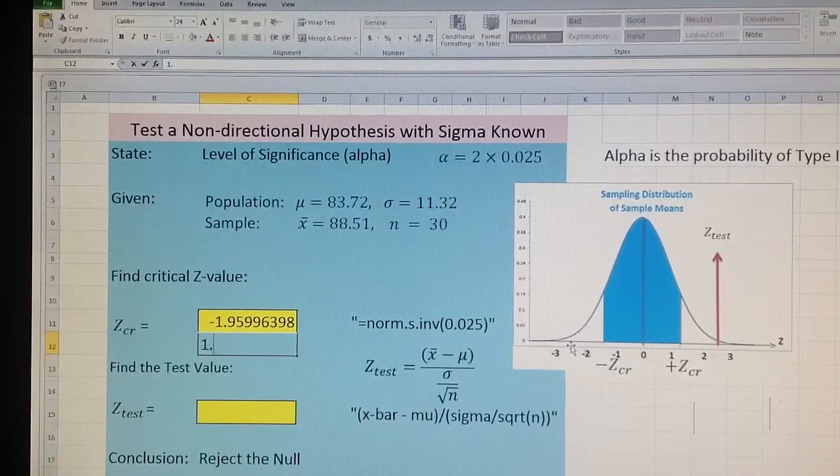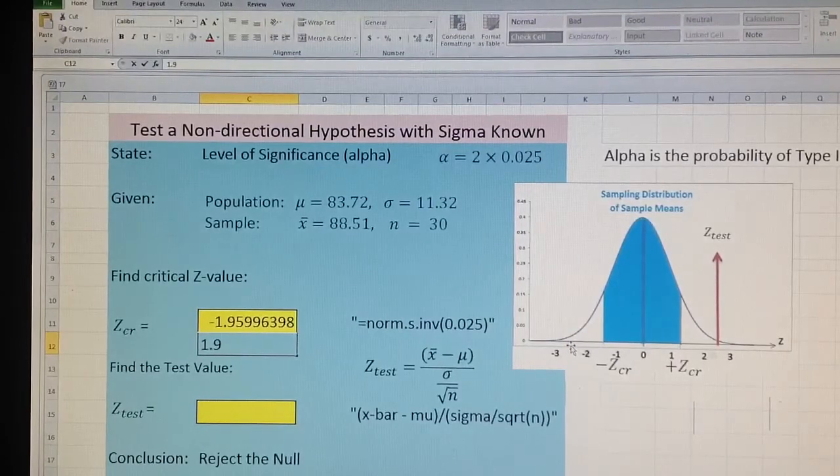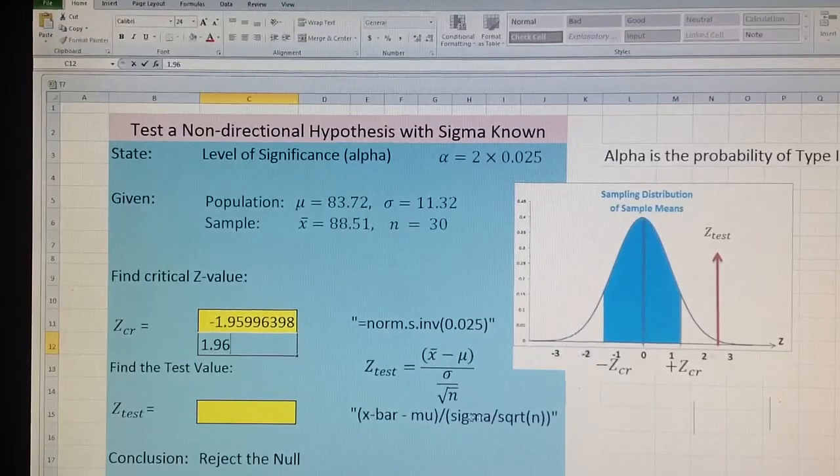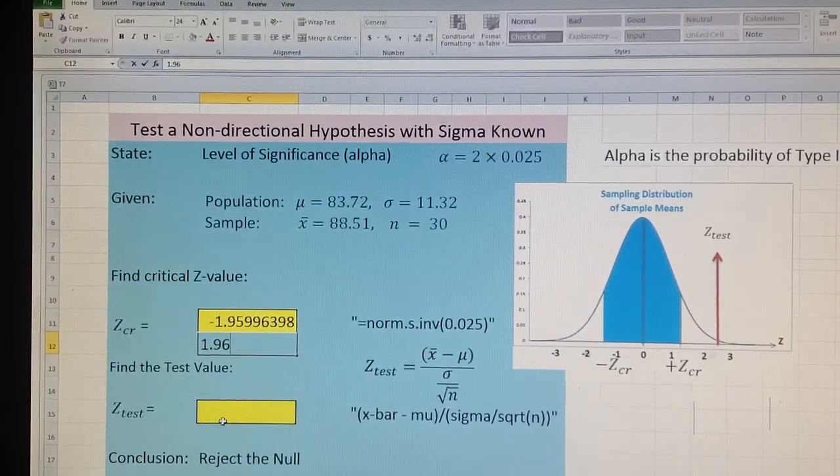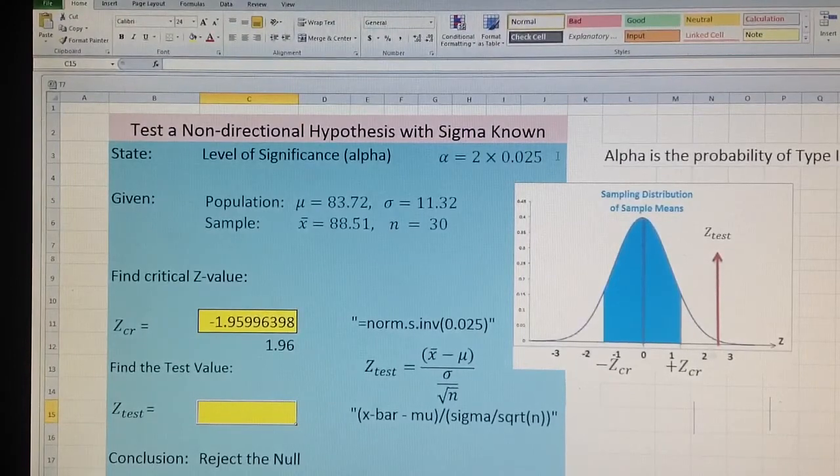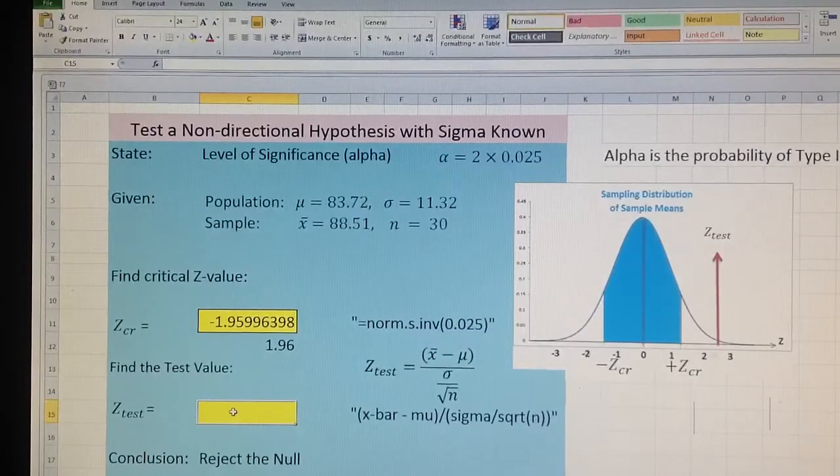And on the positive side, I will round to negative 1.96. This is how everybody knows the critical Z value at level of significant alpha equals 2 times 0.025, or 0.05. Z test.